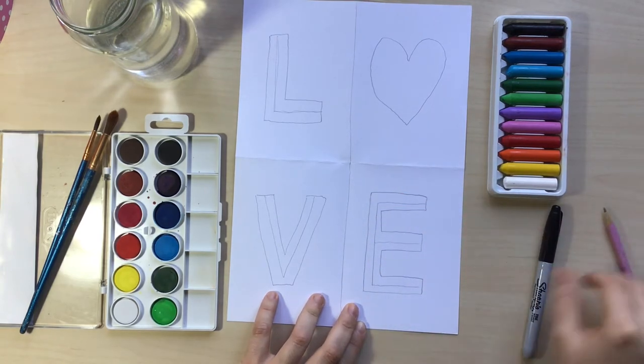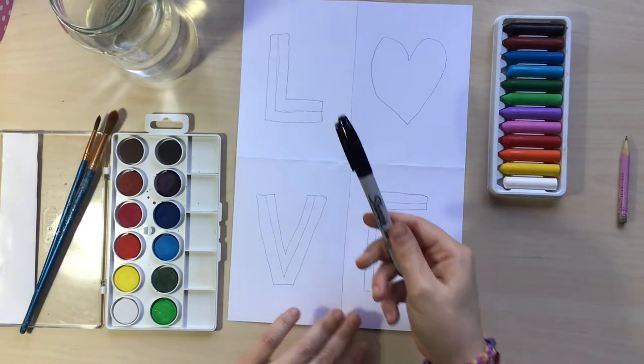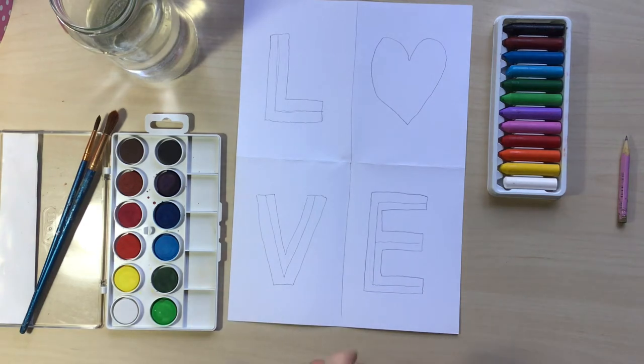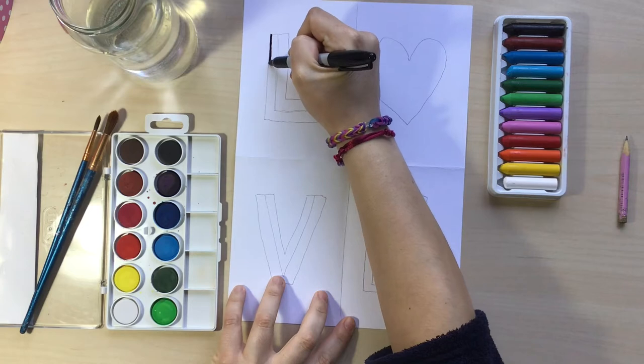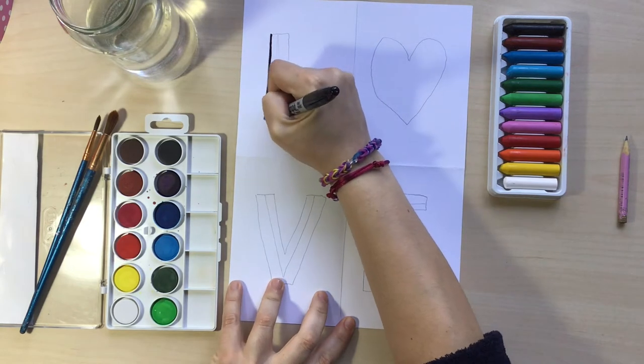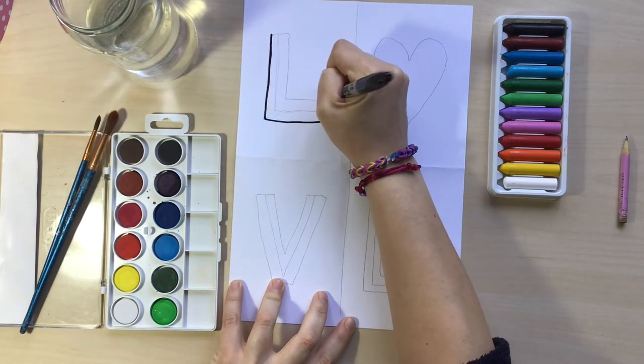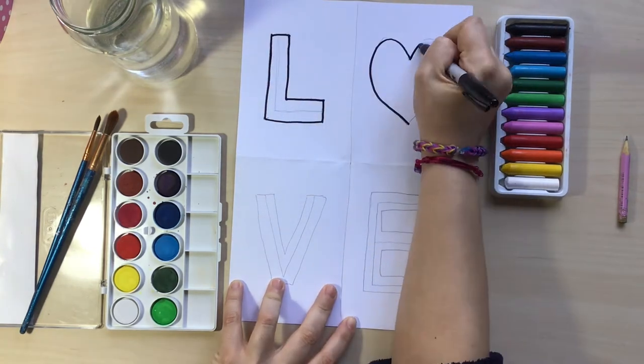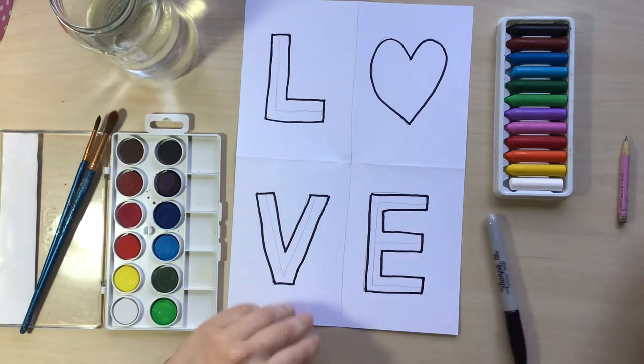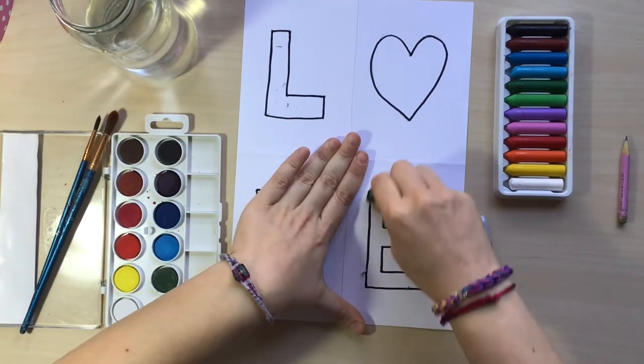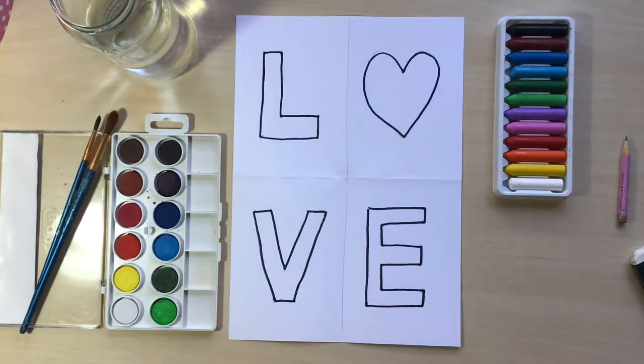In here, we have the basis of our art piece. I'm going to get a black marker, and I'm going to go around the block letters I just made. The L, the heart that seems like an O, the V, and the E. Once I'm done with my marker, I'm going to grab my eraser and erase all those pencil marks I just did before.